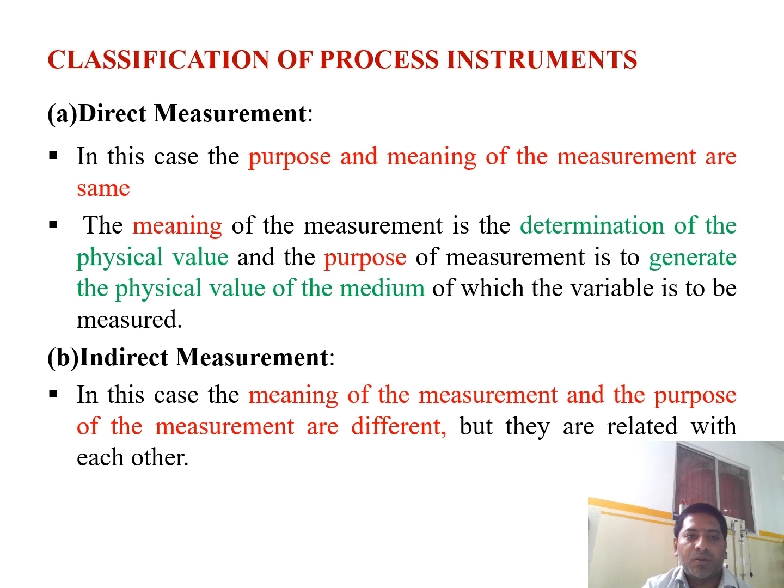The classifications of process are divided into two categories: direct measurement and indirect measurement. In direct measurement, the purpose and the meaning of measurement are the same. The meaning of measurement is the determination of the physical value, and the purpose is to generate the physical value of the medium of which the variable is to be measured.